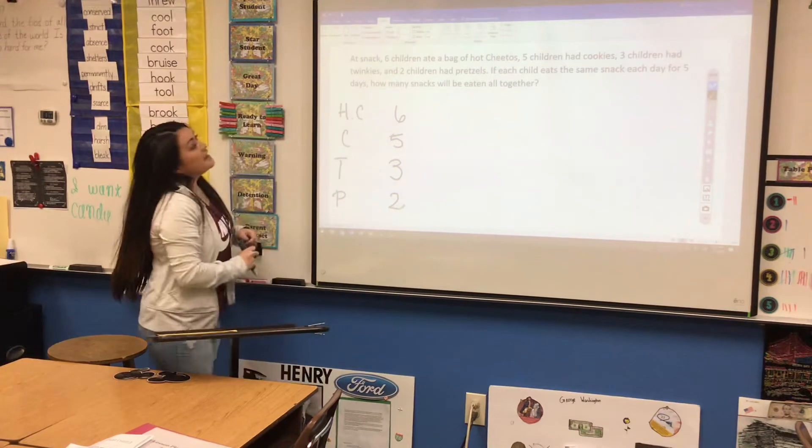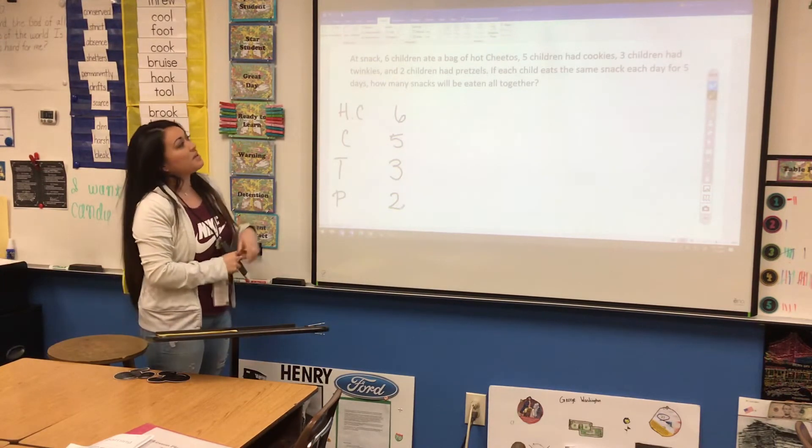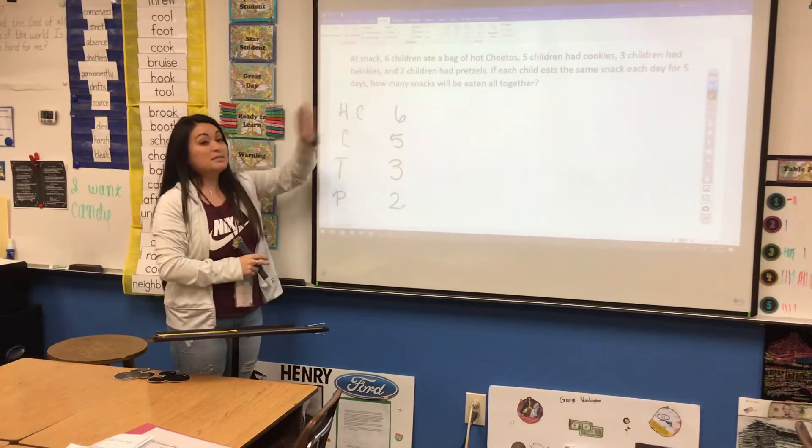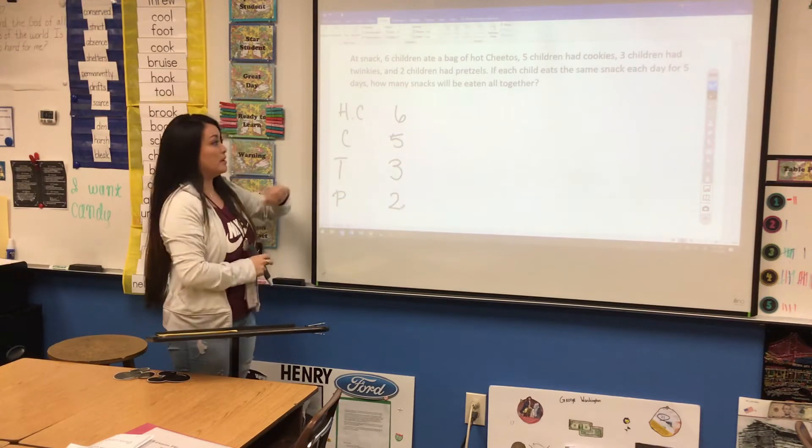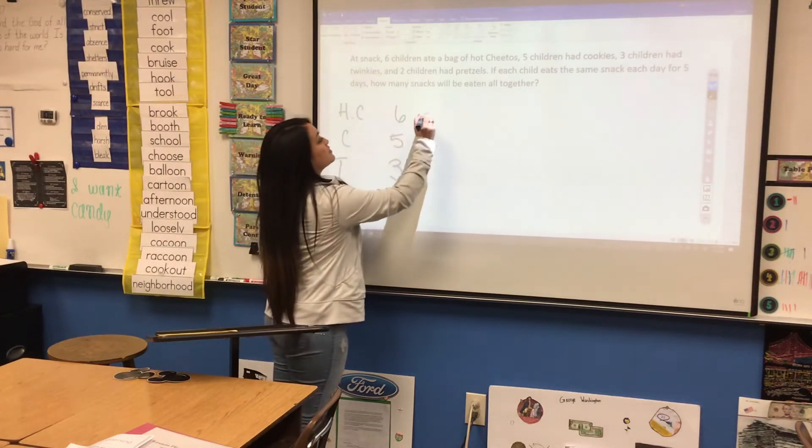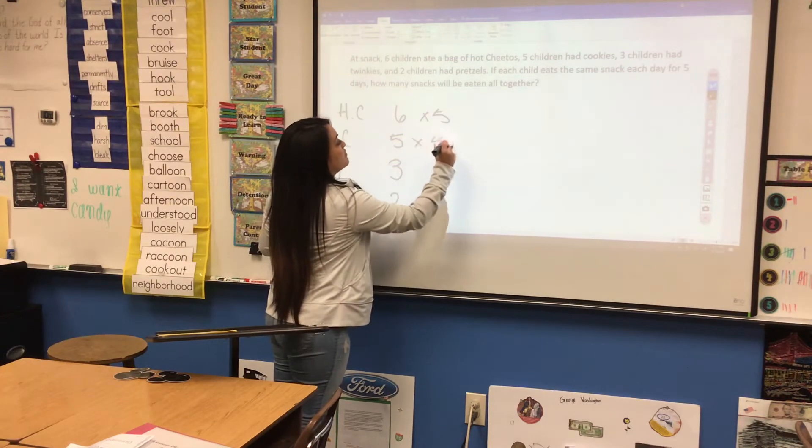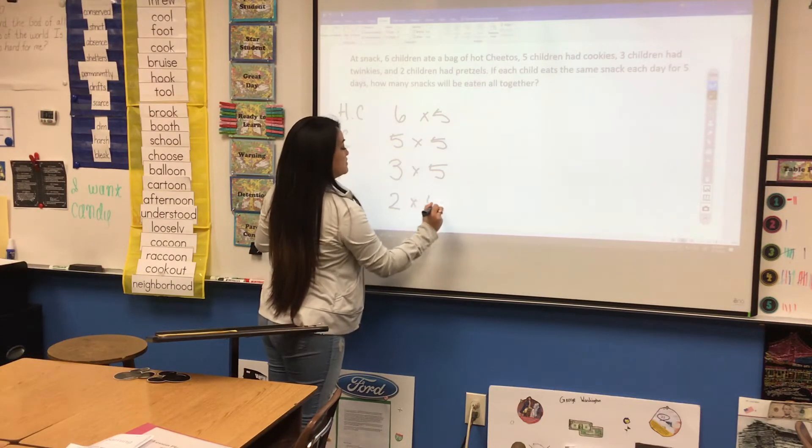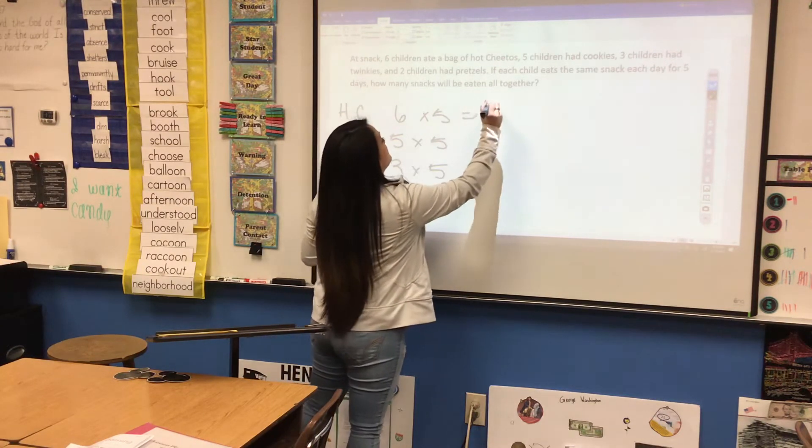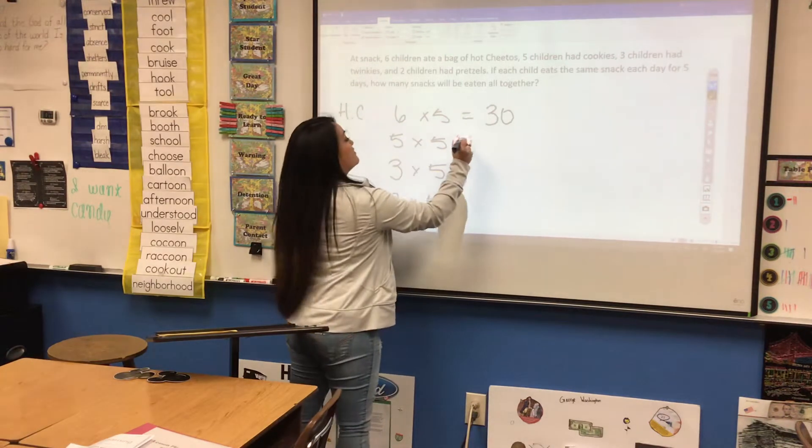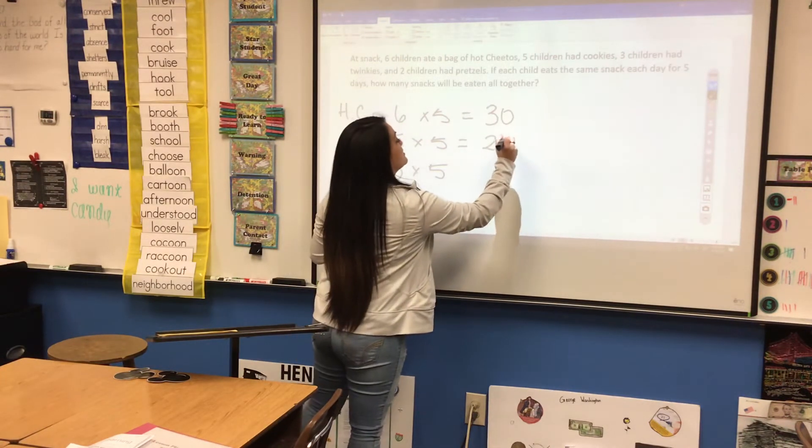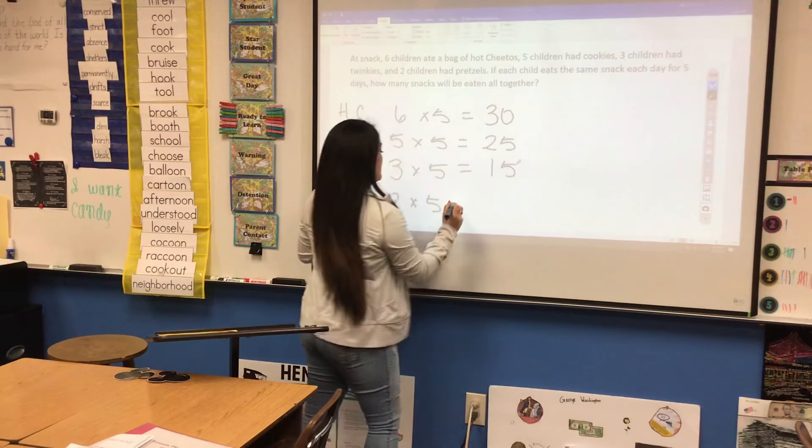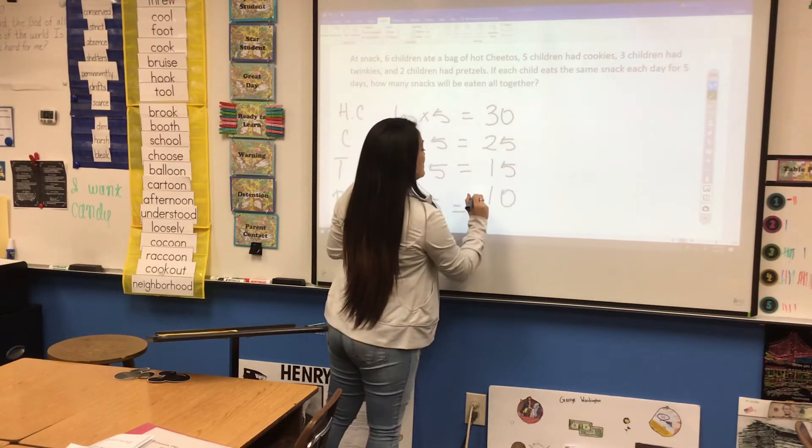So it says, if each child eats the same thing for five days, how many snacks will be eaten altogether? Now, this is going to be a five-step problem, because what we're going to do is we're going to multiply each of these numbers by 5. So these are going to be four of your five steps. So 6 times 5, that equals 30. 5 times 5 is 25. 3 times 5 is 15. And 2 times 5 is 10.